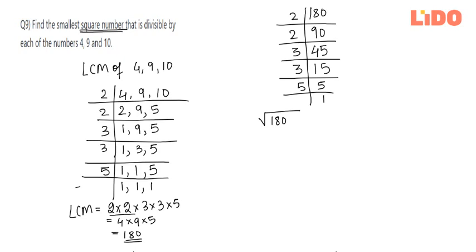So just to check if 180 is a perfect square, we'll write down the factors. So it's 2 x 2 x 3 x 3 x 5.